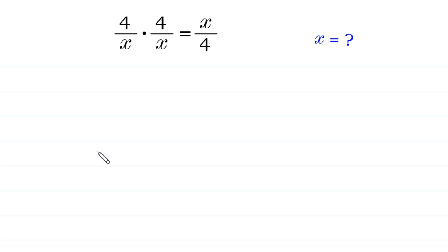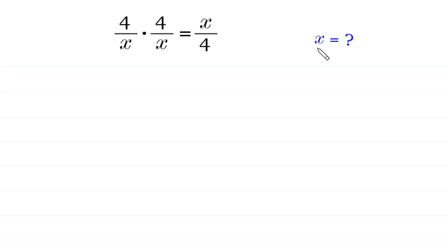Hello, welcome to how to solve this very nice equation: 4 over x times 4 over x is equal to x over 4. We need to find all possible values of x.